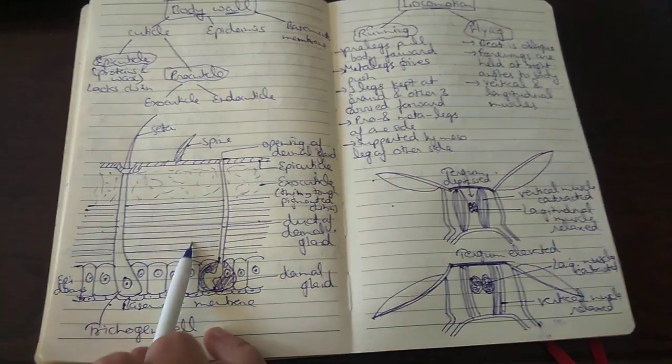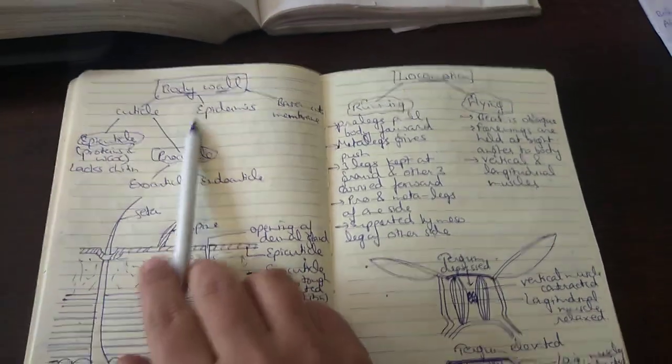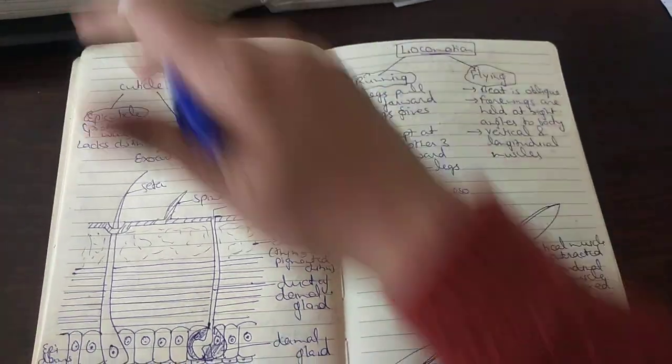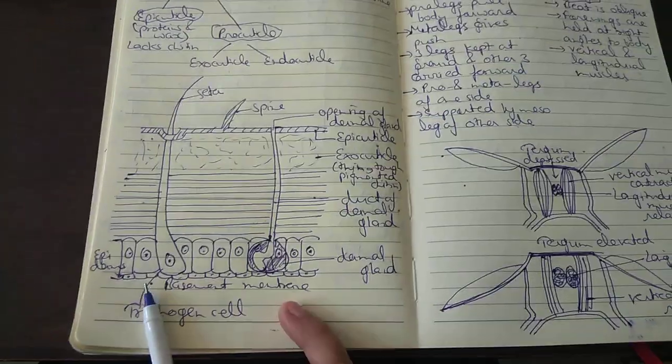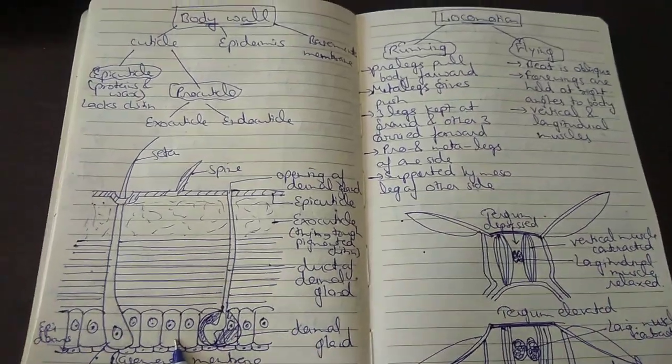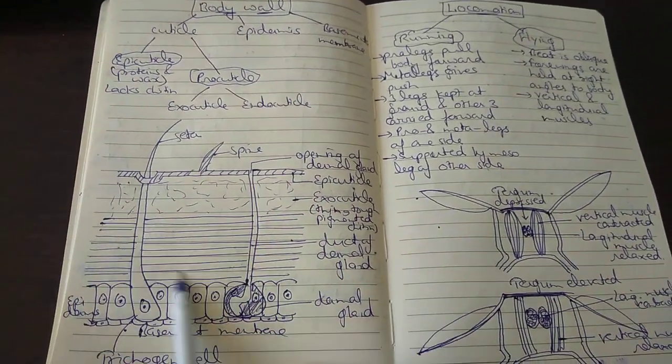These are movable bristle-like structures present on the surface of the cockroach, and there are spines which are immovable structures. Then comes the basement membrane, which is basically a single layered cell membrane on which the rest of the body wall rests.